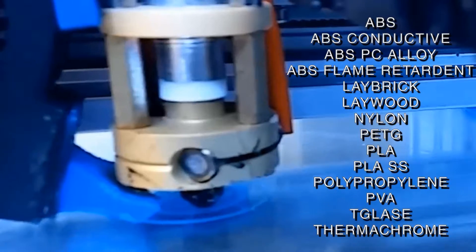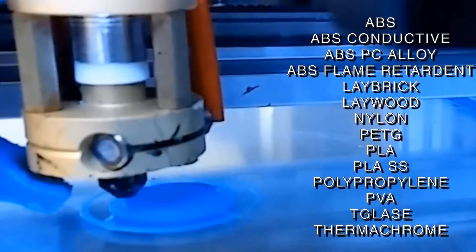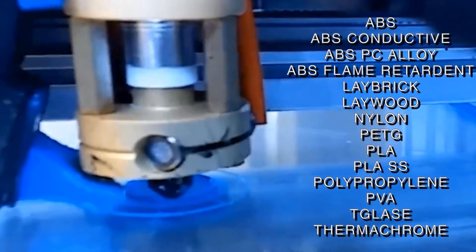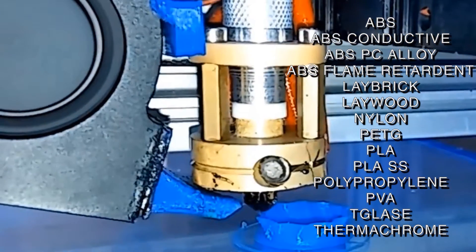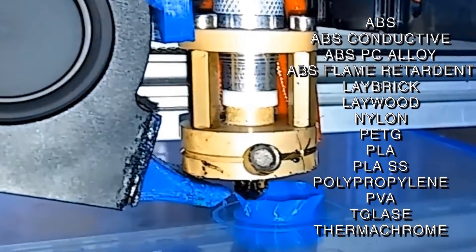This includes ABS, conductive ABS, ABS polycarbonate alloy, flame retardant ABS, lay brick, lay wood, nylon, PETG, PLA, PLA stainless steel, polypropylene, PVA, T-glaze, and thermochrome.